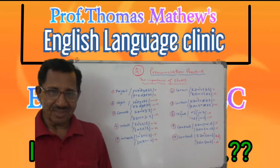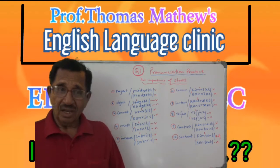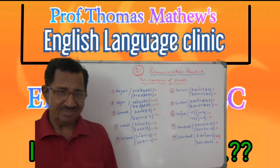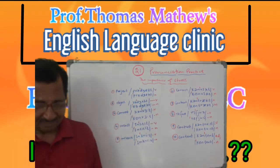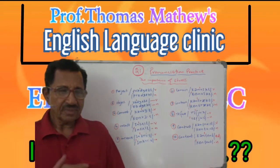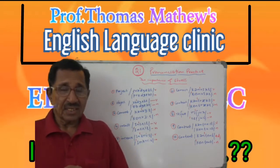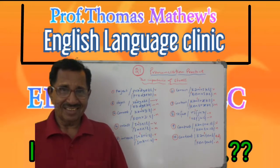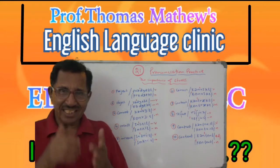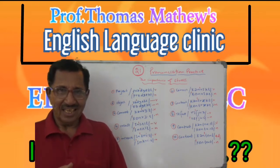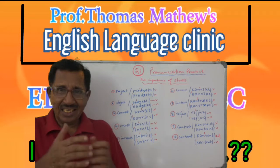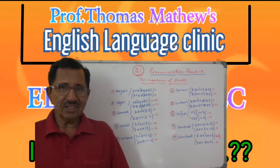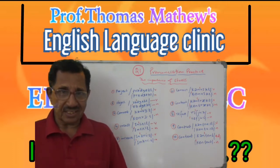And the third one — when you say 'object,' that is verb. 'Object' is noun. See when you change the stress, what happens — importance of stress again. Another example is 'convert.' So 'convert' is to change somebody. He has been converted — converted from X religion to Y religion. That is verb.